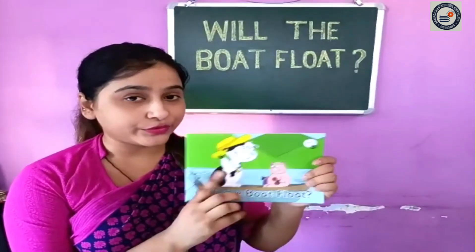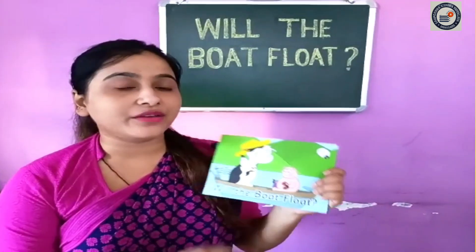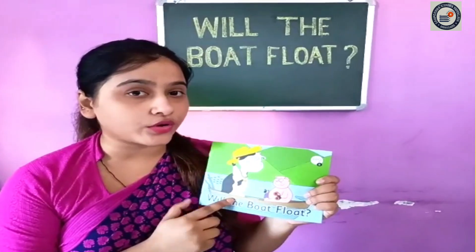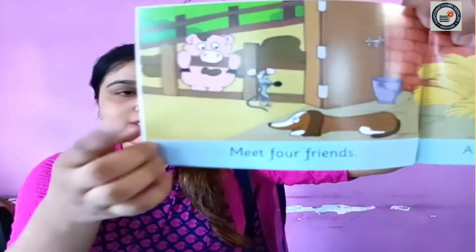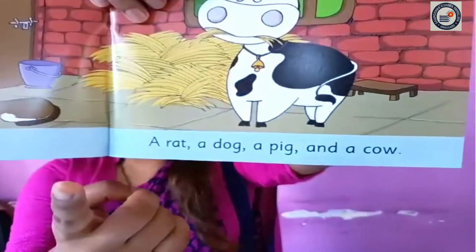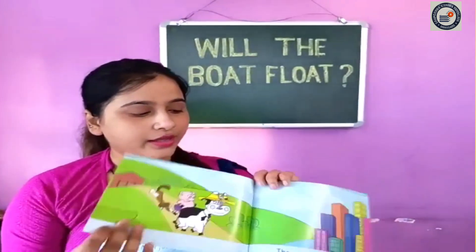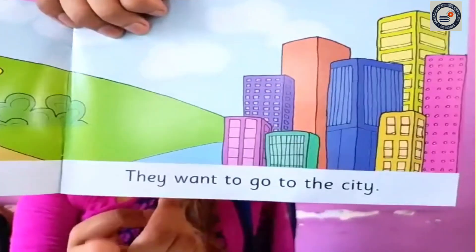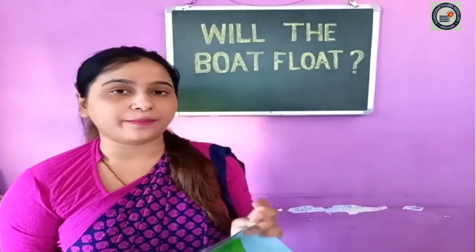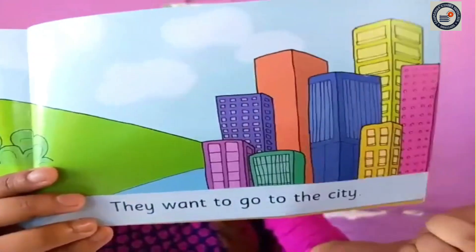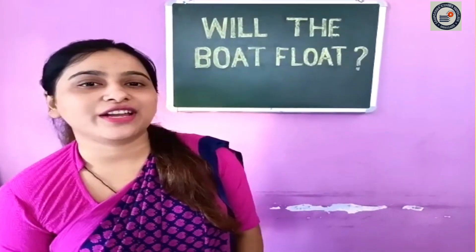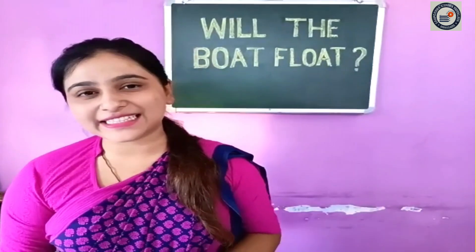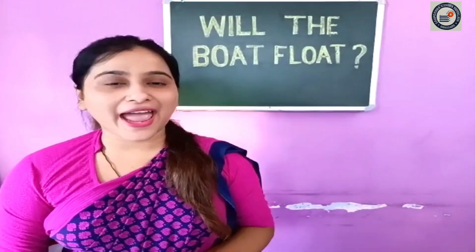You have to read this book — the first three pages of this book. I will show you. You have to read this page, then this page, and this page. You have to read these three pages, up to this page. Read the book and give it to me. Okay children, that's all for today. See you in our next class. Till then, take care and bye.